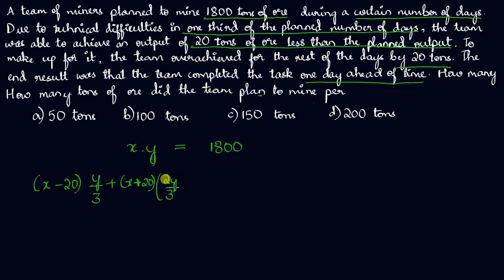Which means that actually whatever they planned to do, they finished it one day less. So the total quantity will be x minus 20 times y by three plus x plus 20 times two y by three minus one, and the same thing is equal to 1800 because that's the amount of ore they wanted to achieve.